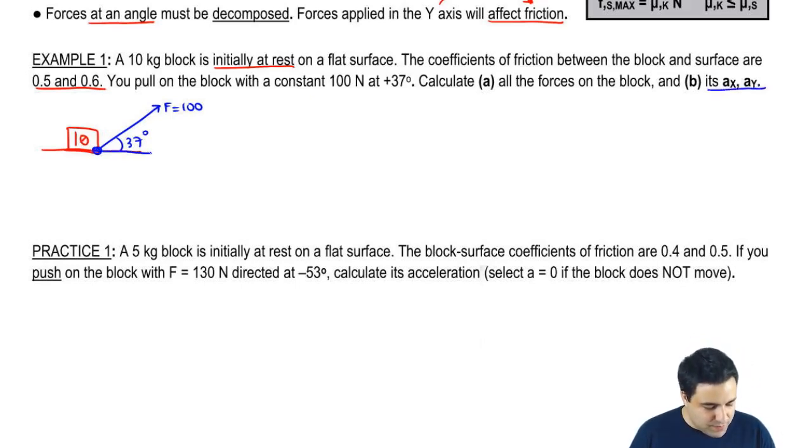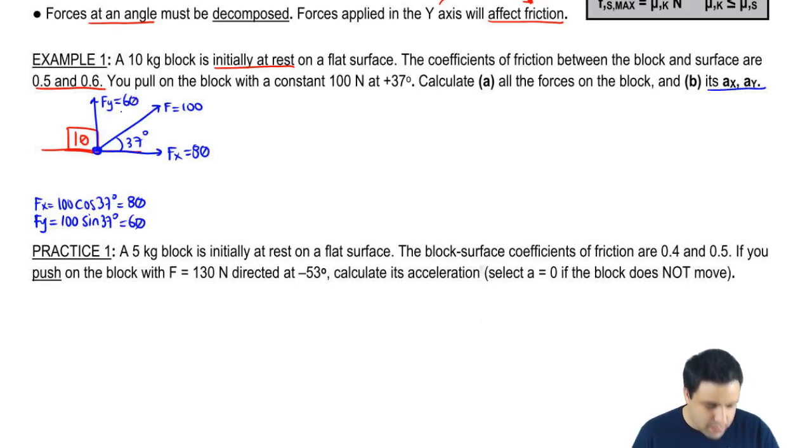So the first thing I'm going to do here is decompose this F. Fx and Fy. Fx is F cosine of theta, so it's 100 cosine of 37. If you plug this in the calculator, you get 80. Fy is 100 sine of 37, and this gives you 60.